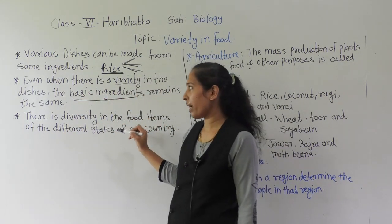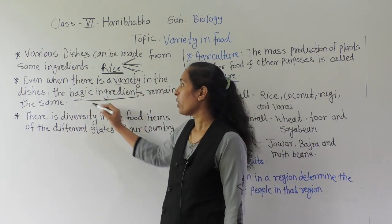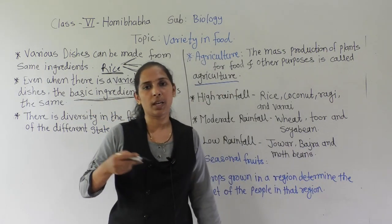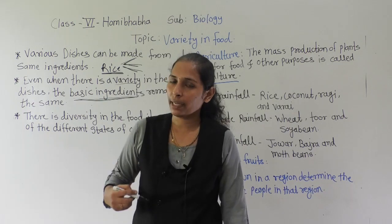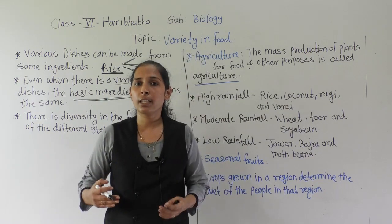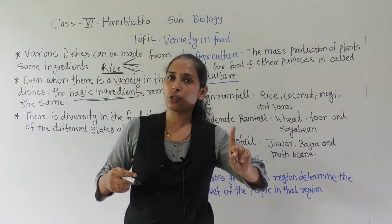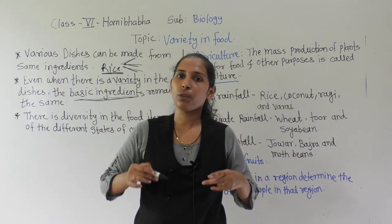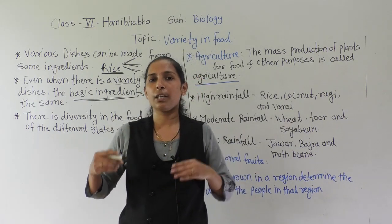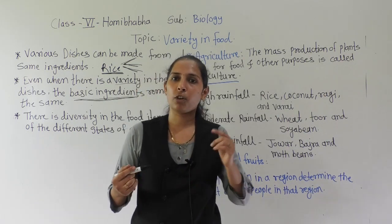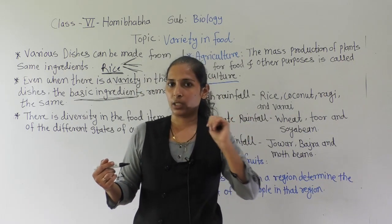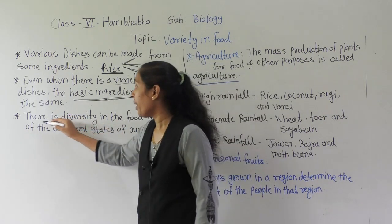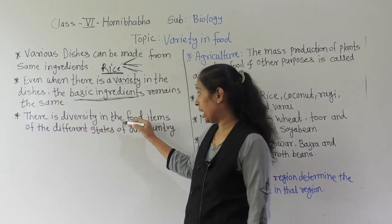In short, from a single food material or single ingredient we can make different types of food stuff. Rice is the basic ingredient and from that basic ingredient we can make many different food materials. So from one single ingredient, we can make different types of food items.